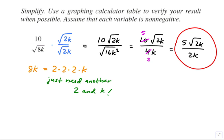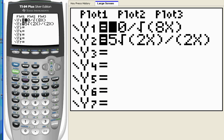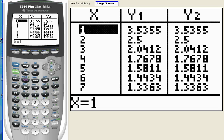Now let's use a graphing calculator table to verify our work. I've entered our original expression into the calculator as y1 and our answer as y2. Let's go to a table and see if for every value of the input variable x, the outputs y1 and y2 are the same. And they are. So I feel good about our work.